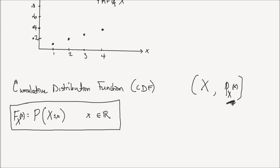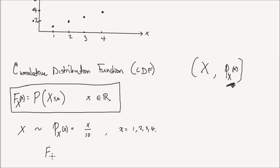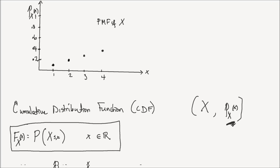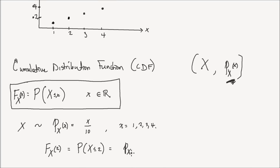Going back to our example where we had random variable x with PMF equal to x divided by 10, for x equal to 1, 2, 3, or 4: what is the CDF at x equals 2? Capital F of 2 is the probability that the random variable x takes values less than or equal to 2. The only two points less than or equal to 2 that have probability mass are the points 1 and 2. Therefore, that CDF is simply the probability of x taking a value of 1 plus the probability of x taking a value of 2.